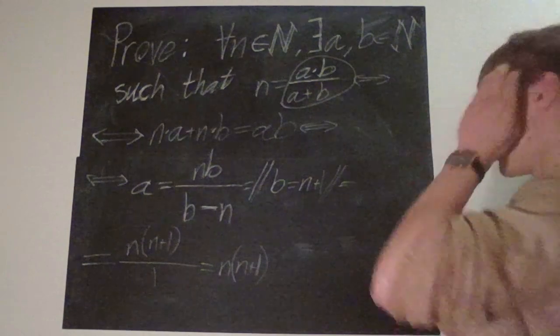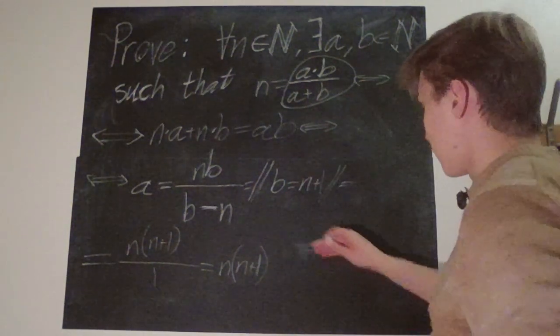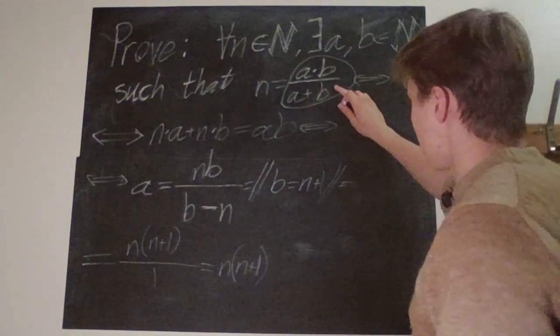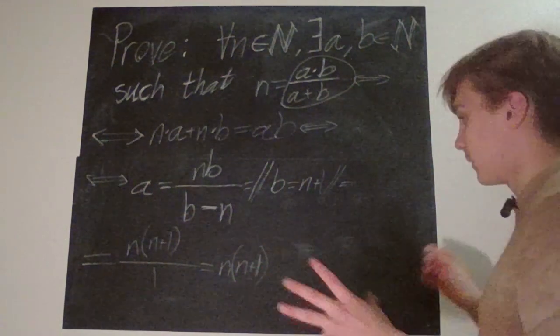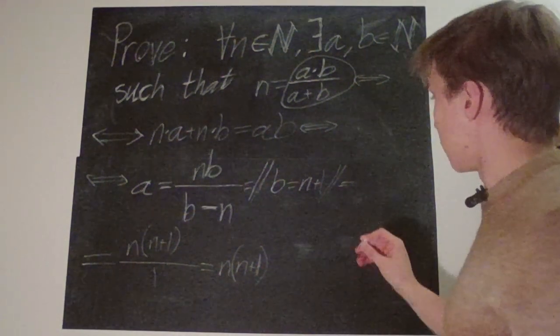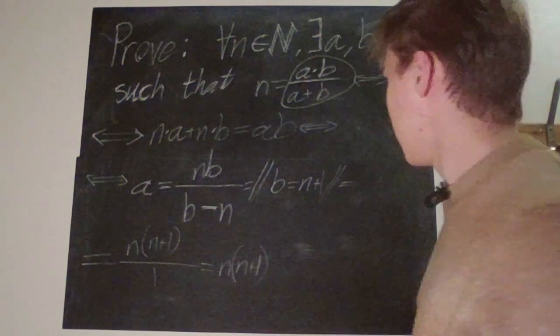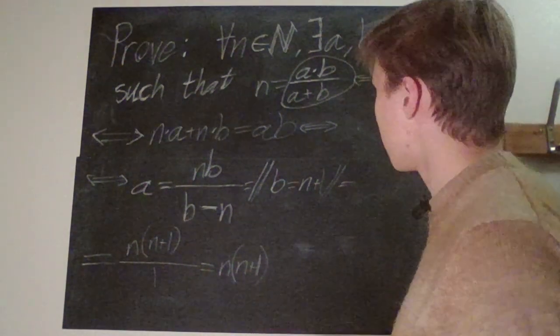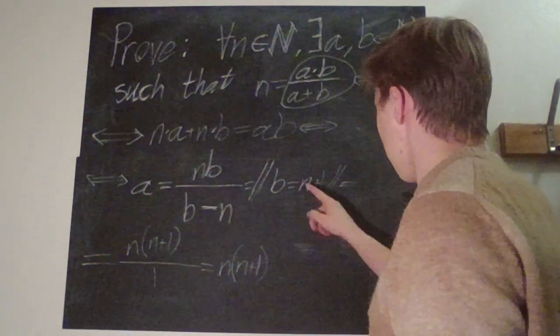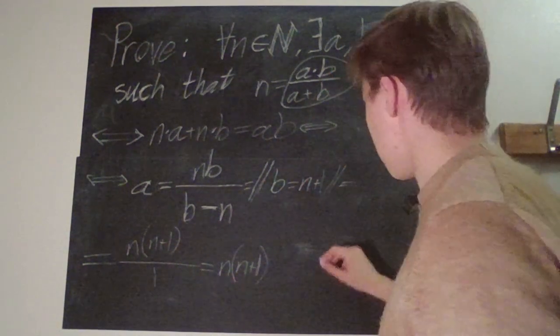Just for fun we'll check this out. If we just plug it into the first one and see that it works out. We have that a is equal to n times n plus one, and we have that b is equal to n plus one. So a times b...